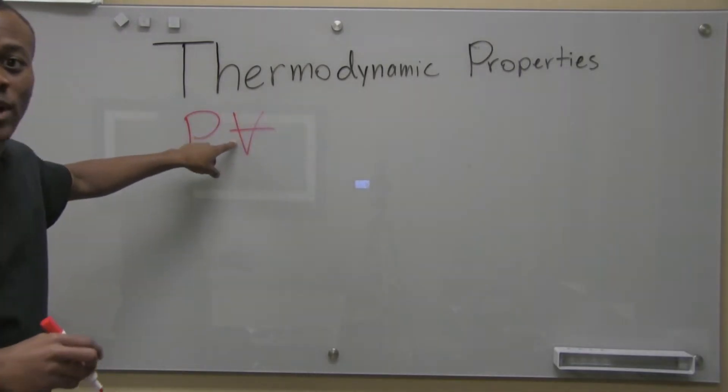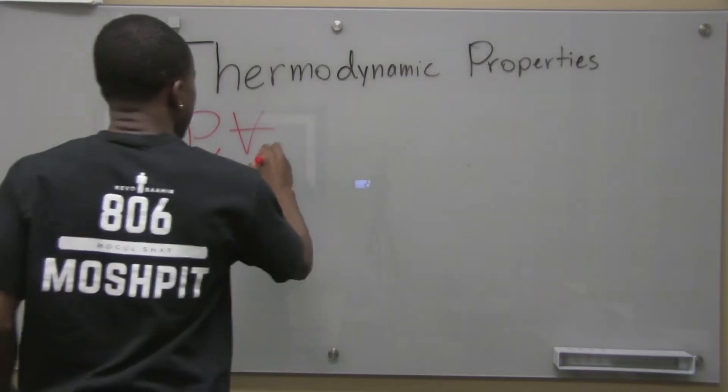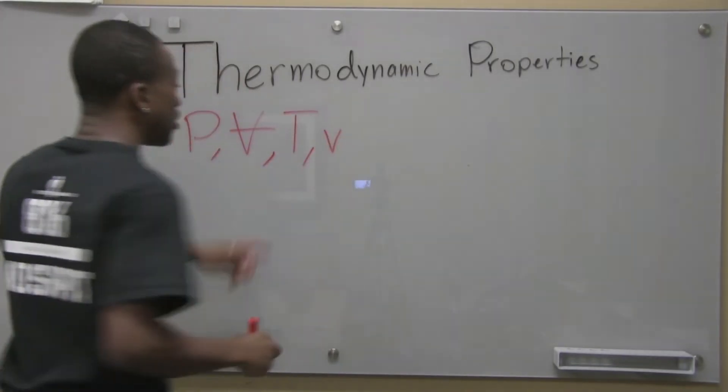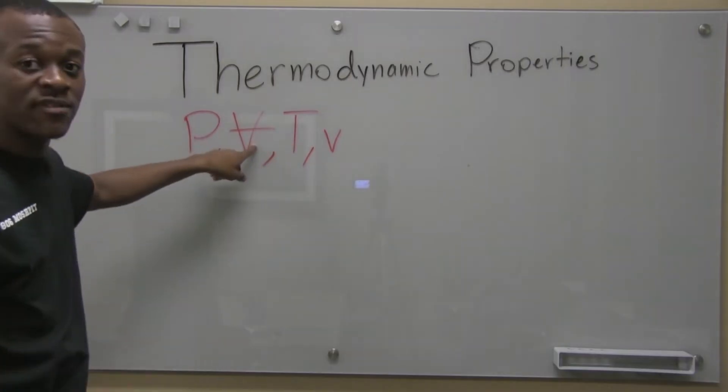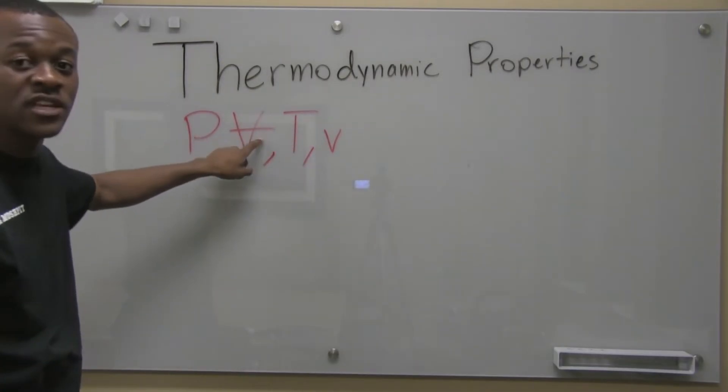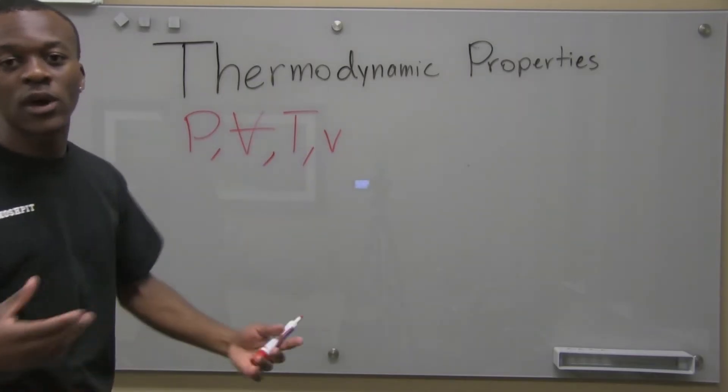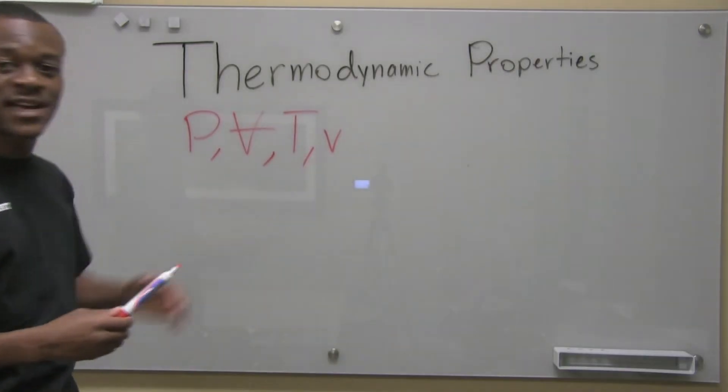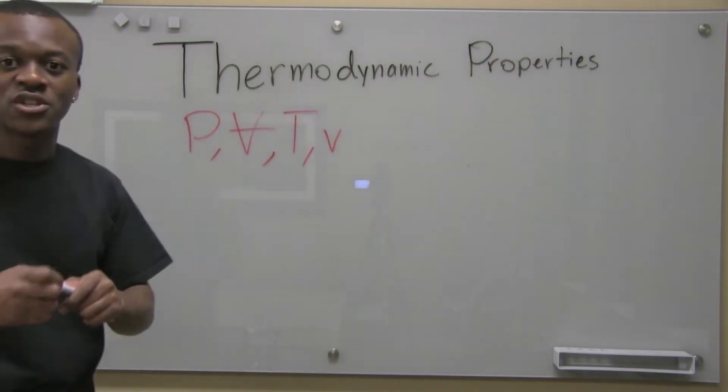I'll explain later why I drew my V like that. Temperature, there's something called specific volume and that's why I drew my V like that. This V denotes specific volume, while this V denotes volume as a whole. And while you guys might not know what specific volume is exactly right now, we'll still get into that. But that's how I differentiate the two.